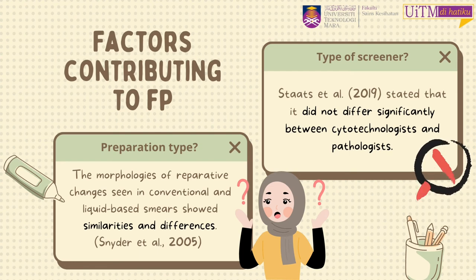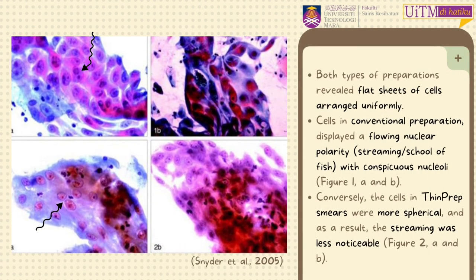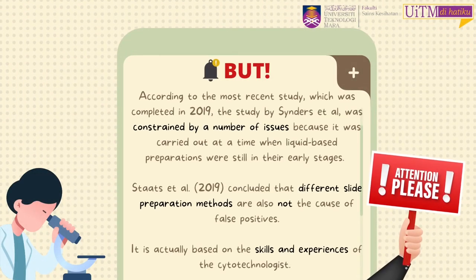How about the type of preparation? We have two types: conventional and liquid-based methods. Studies found that morphologies of reparative changes seen in conventional and liquid-based smears show similarities and differences. Both types reveal flat sheets of cells arranged uniformly. Cells in conventional preparation display a flowing nuclear polarity — streaming or school of fish — with conspicuous nuclei. Cells in liquid-based smears were more spherical and the streaming was less noticeable. According to the most recent study conducted in 2019, different slide preparation methods are also not the cause of false positives. It is actually based on the skill and experience of the cytotechnologists.